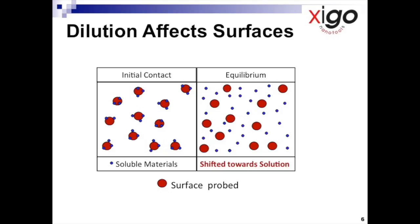The equilibrium is now shifted towards the solution, and the more dilute the suspension, the greater will be the shift. At the extreme, you can end up with a suspension where the surface probed has no blue dots. This is now completely different from that existing in the concentrated suspension.